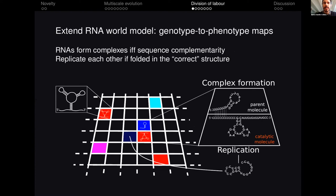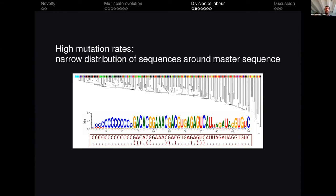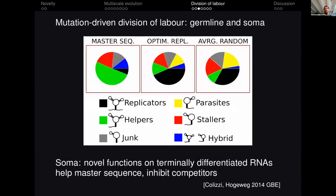Next step: one thing I ignored in my RNA model before was that RNAs should have a sequence and a secondary structure. So we introduced this genotype-to-phenotype map — sequence to secondary structure — in the model, and we let RNAs replicate other RNAs when they fall into a correct arbitrary secondary structure. When we look at high mutation rates, we would expect from theory and intuition a broad range of sequences with high variability. Instead we see the opposite: a narrow distribution of sequences, and at the center a kind of germline sequence. It turns out that this germline coordinates a division of labor that happens through mutations — the mutants of the sequence behave like soma in the sense that they are terminally differentiated, cannot be replicated further, and have all kinds of novel functions that we did not build into the model.